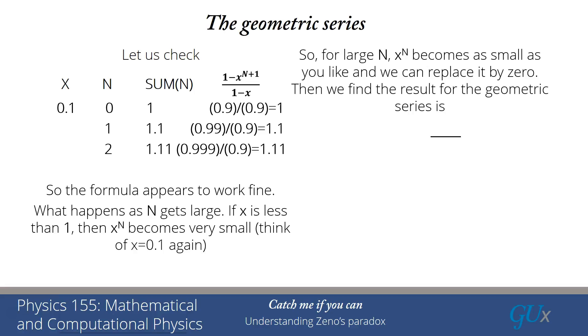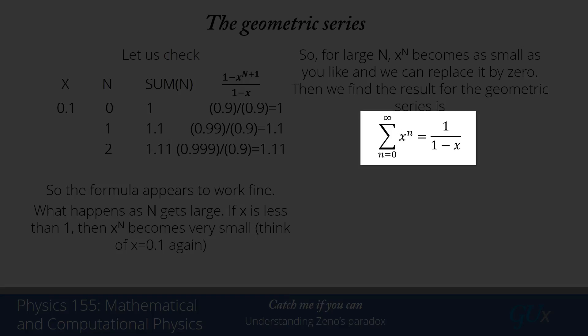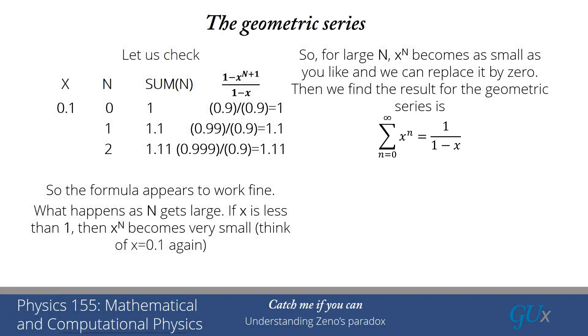So if I take the limit where n goes to infinity, I can replace x to the n by 0 under the condition that x is less than 1. Notice that if x was bigger than 1, this is complete garbage. It only works in the case where x is less than 1. And when I say x less than 1, I really mean the absolute value of x being less than 1. And then what we're going to find for the result for the geometric series is simply that the sum n equals 0 to infinity of x to the n equals now 1 for the numerator because the x to the n plus 1 got replaced by 0 divided by 1 minus x.